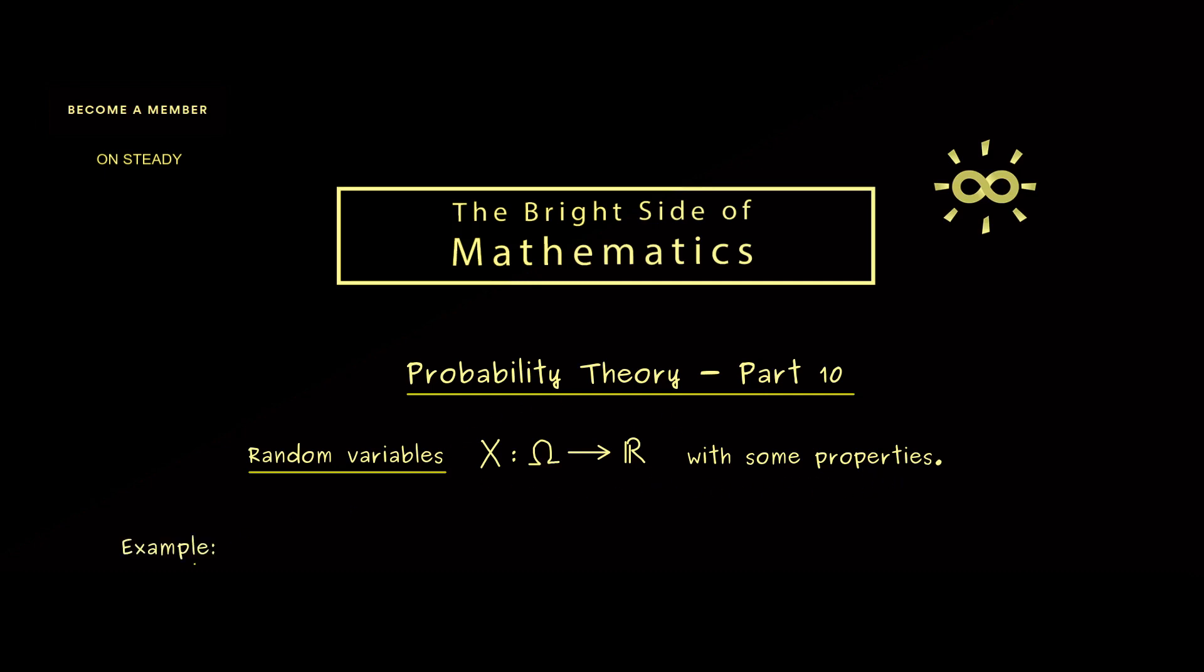But before we do this, let's first discuss a simple example. What we could do is, as often, throwing two dice—maybe we have a red one and a green one. Hence we can distinguish the dice, which means this is the same as throwing one die twice. Therefore you should immediately be able to write down the probability space, because this is exactly what we discussed in the last video.